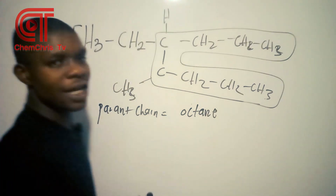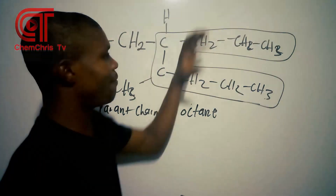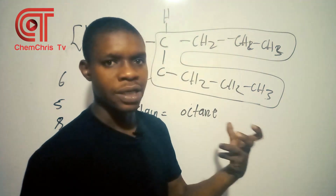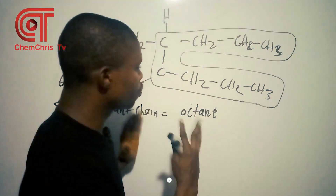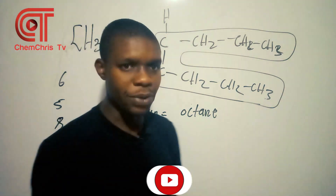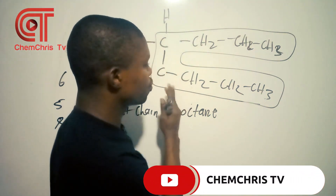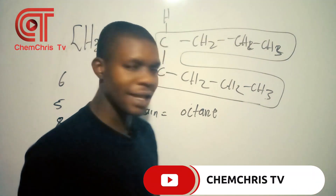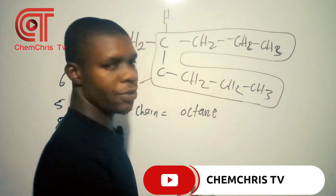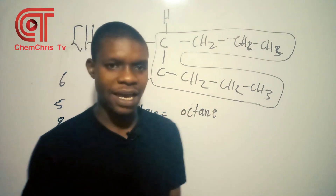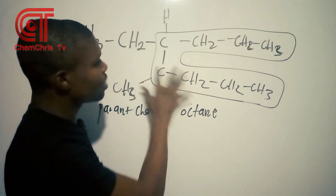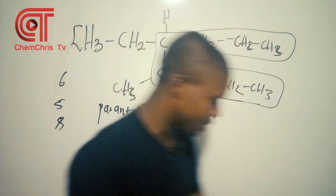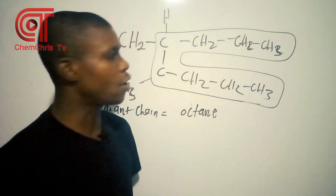This was the first rule when it comes to naming alkanes. This rule is very, very important because if you fail this rule, you have already failed the name. So you must take absolute care when selecting the longest carbon chain.